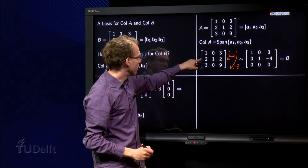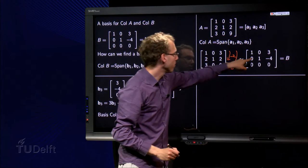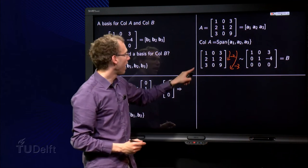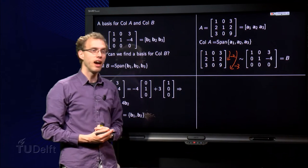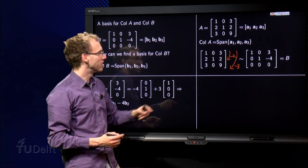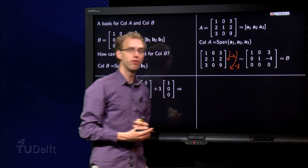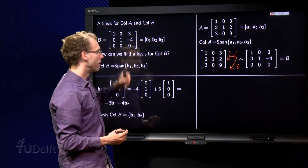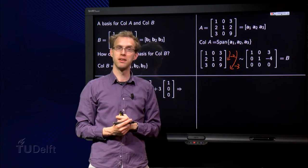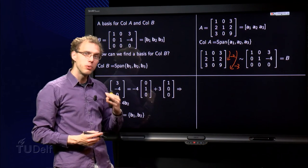So what do we get? Here we get [0, 1, -4] and here we get [0, 0, 0] over here. And, that's a coincidence, the reduced echelon form of A is exactly the matrix B in this case.